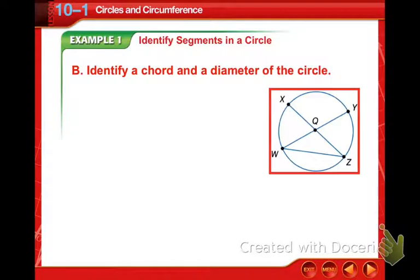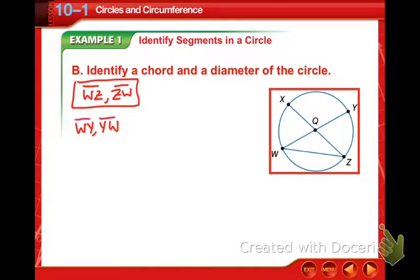So here, now we're looking to name some chords. So we want to name a chord and a diameter of this circle, circle Q. So the only chord that is not a diameter is WZ down at the bottom. So WZ or ZW is our chord. In the diameter, we have a couple different options here as well. WY or XZ. And again, we can rearrange the naming on that. So WY or YW, and then we have XZ or ZX. Those are all four of our names for the only two diameters we have given here.